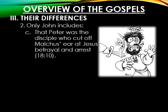Only John includes that Peter was the disciple who cut off Malchus' ear at Jesus' betrayal and arrest. The Synoptic Gospels mention that a disciple cut off a high priest's servant's ear, but John specifically names Peter. Throughout the semester, you'll notice a little rivalry between John and Peter — who could run fastest, who could get to Jesus first from a boat. John clearly enjoyed identifying Peter as the hothead who cut off someone's ear.